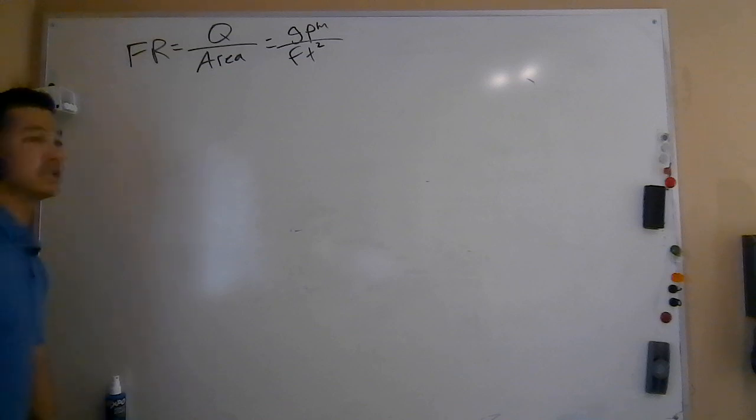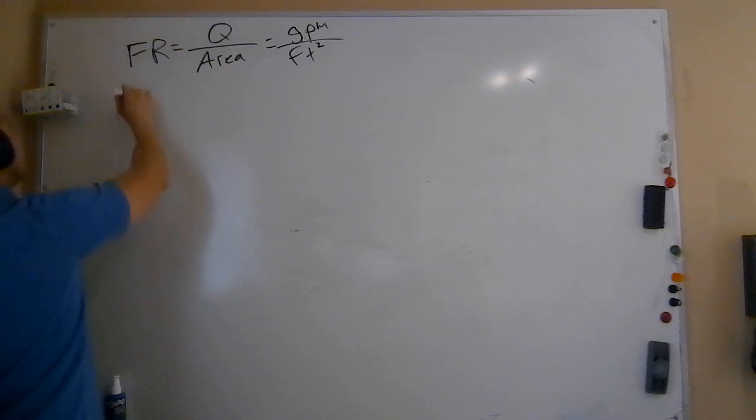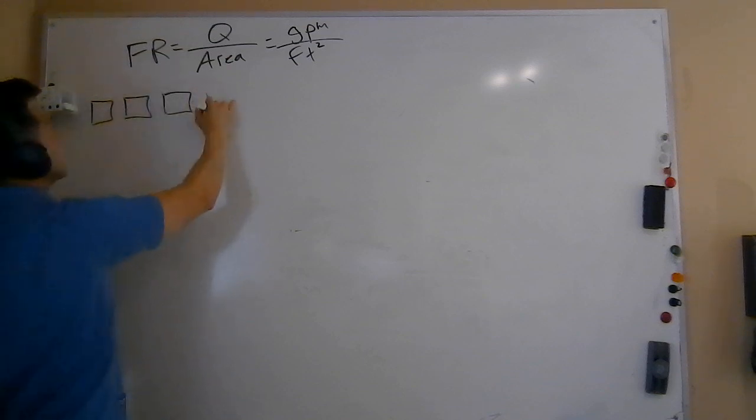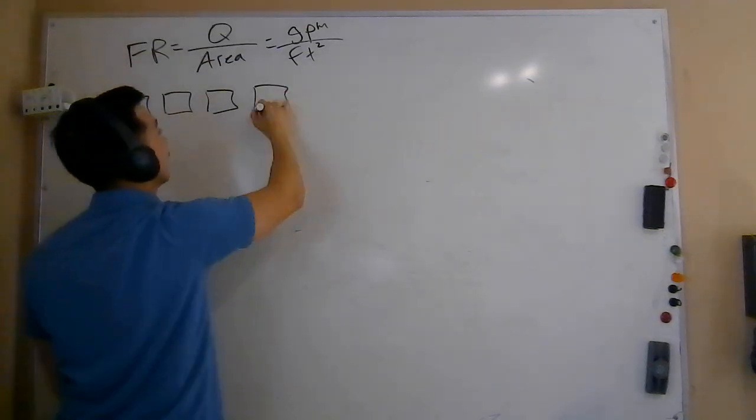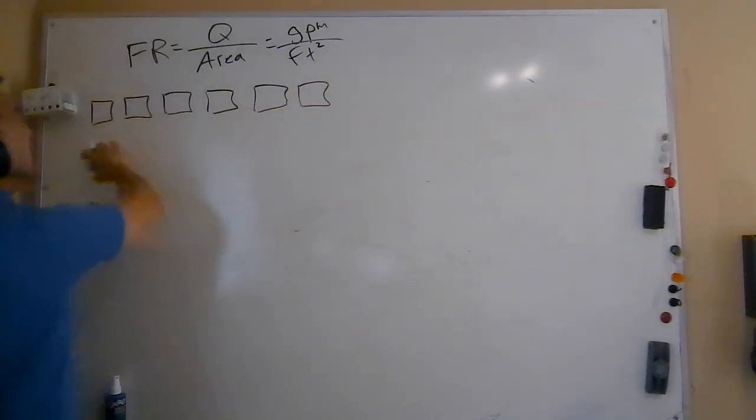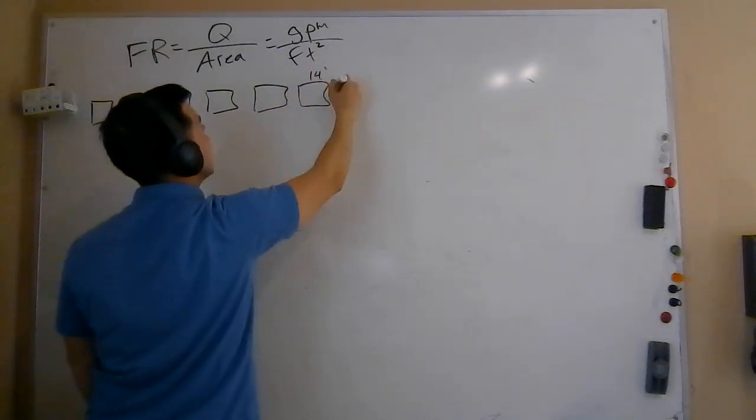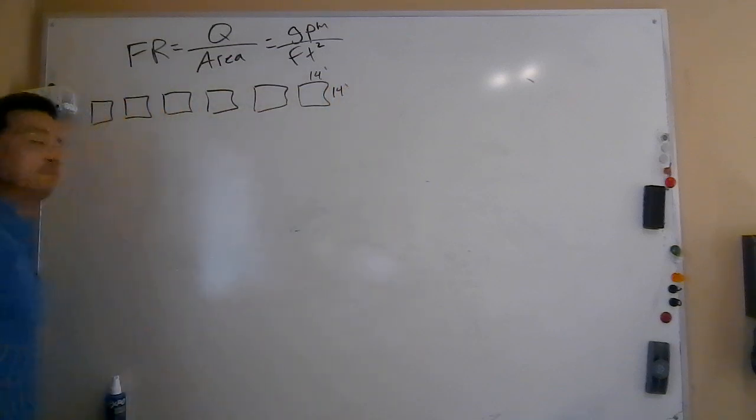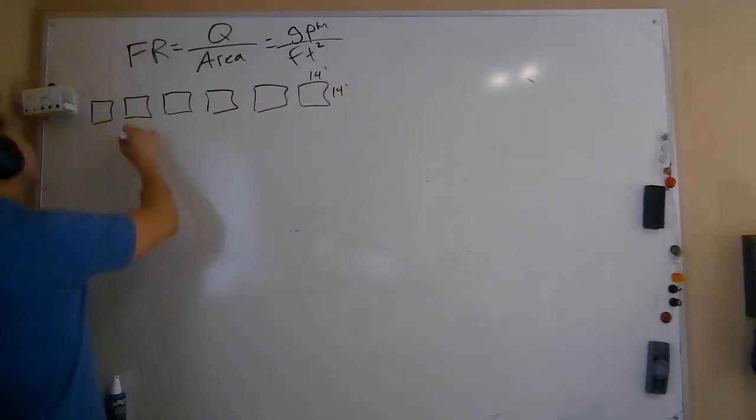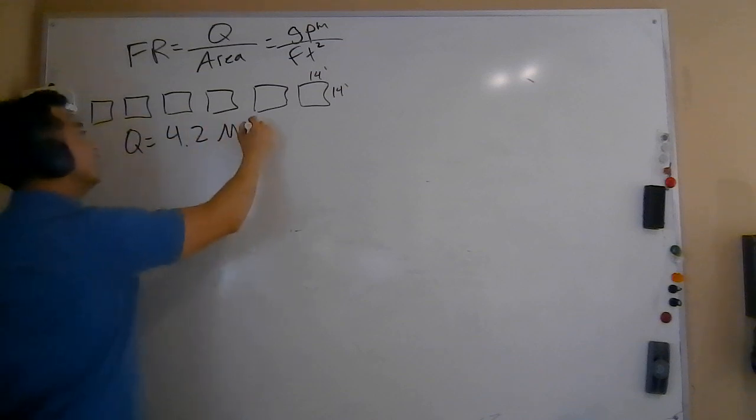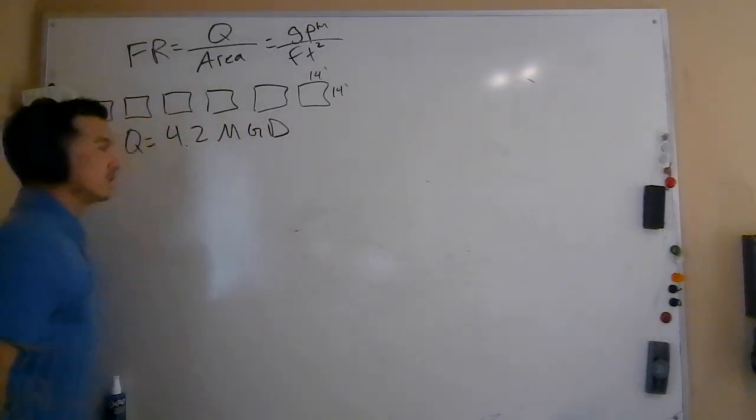In this example problem, we're going to be looking at a wastewater treatment facility located close to Palomar College, the Meadowlark reclamation facility. At this facility, they have six identical size filters that they use. These are carbon-based filters. They've each got the dimension of 14 feet by 14 feet. And the average flow that we are treating right now, we're going to say 4.2 MGD. Remember what MGD stands for? Million gallons per day.